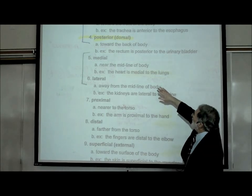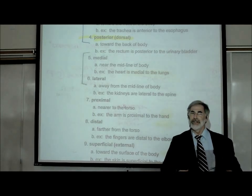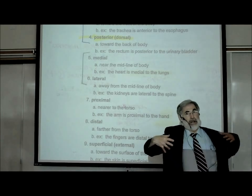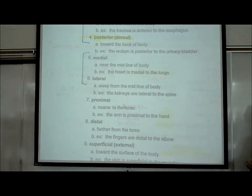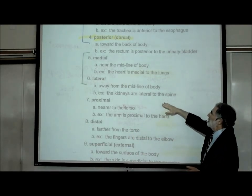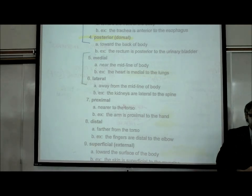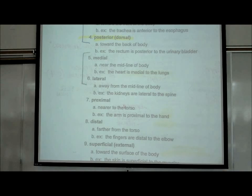We could say your heart is medial to your lungs, or your lungs are lateral compared to your heart. These are comparative terms — we're always comparing one part of the body with another. Another example: your kidneys are lateral to your spine. Your vertebral column is along the middle of your body, and your kidneys are on the sides — lateral compared to your vertebral column.